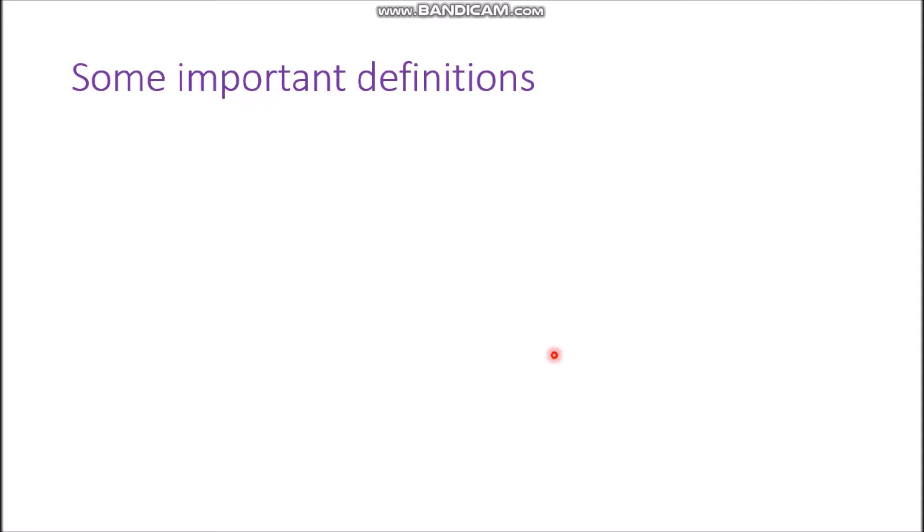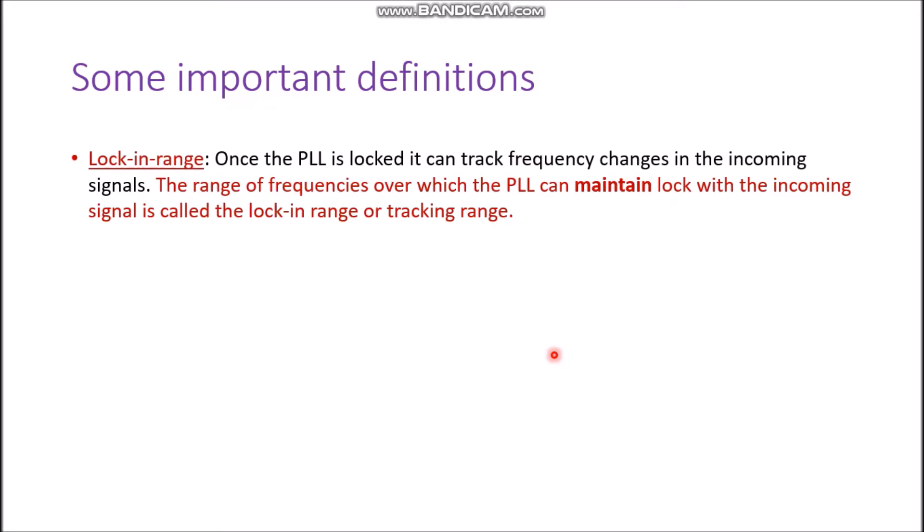Now there are certain important definitions associated with this PLL that we should know. The very first is the lock-in range. Once the PLL is locked it can track frequencies in the incoming signal. The lock-in range is defined as the range of frequencies over which the PLL can maintain lock with the incoming signal — that is known as lock-in range or tracking range.